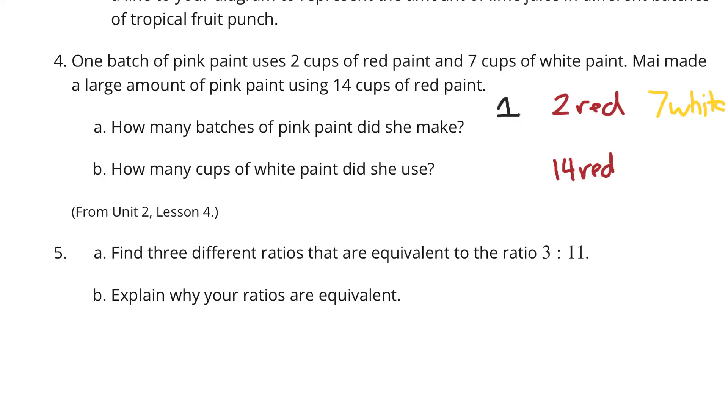How many batches of pink paint did she make? Our single batch uses a ratio of two red to seven white. She's saying now that she made a large batch with 14 red. How do we get from two to 14? What do we multiply by? We multiply by seven. And so this is going to be seven batches of pink paint. When you look for how much white did she use, multiply that by seven to maintain the equivalent ratio, and you'd end up with 49 cups of white.